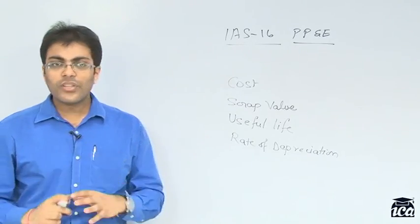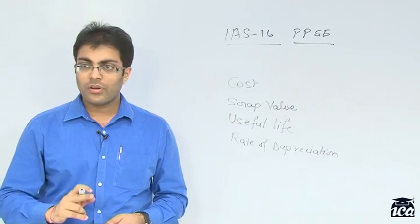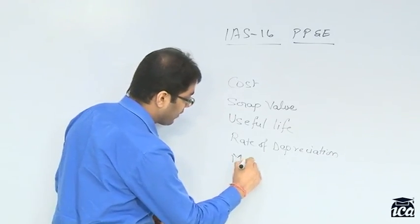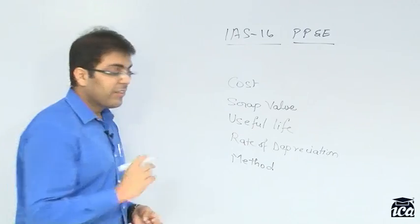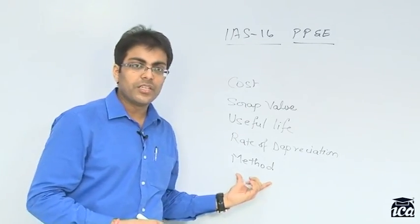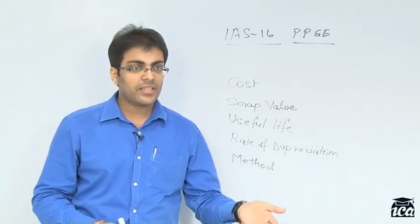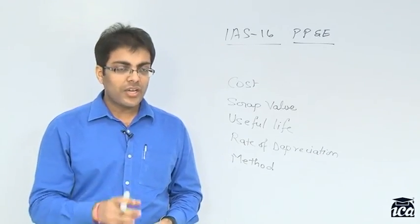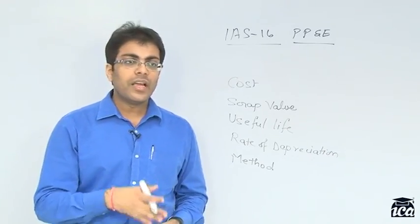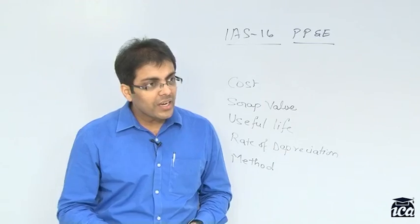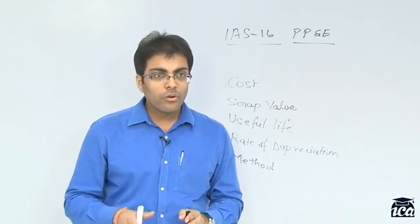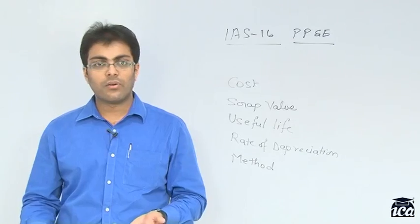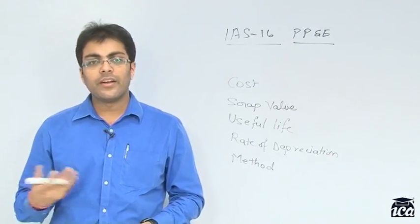Please understand that in the Indian context, if there is a change in the method of depreciation, we apply the method retrospectively. But under IFRS, all of these — rate, useful life, and method — are considered to be estimates. Any change in the depreciation method or rate or useful life is regarded as a change in estimate and accordingly it is implemented prospectively. Any depreciation amount is charged to the profit and loss account, which reduces the profit and reduces the value of the asset.